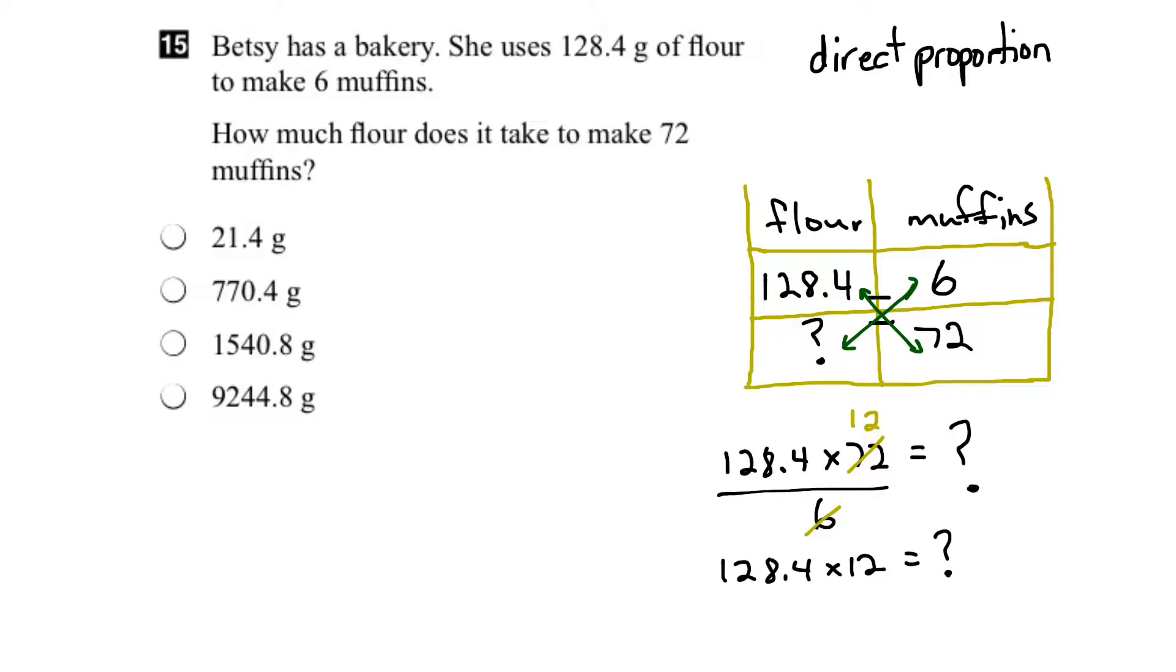So let's work that out. I've got 128.4 times 12. So 2 times 4 is 8. 2 times 8 is 16. Carry the 1. 2 times 2 is 4, plus 1 is 5. 2 times 1 is 2. Bring down a 0.